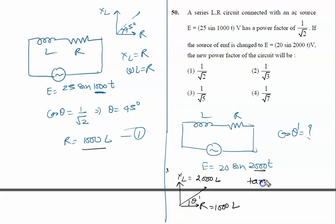We can say tan θ' is written as 2000L upon 1000L, which equals 2. So tan θ' = 2/1 = 2.